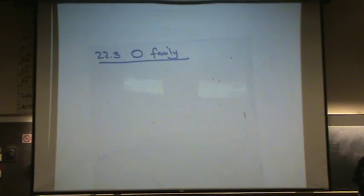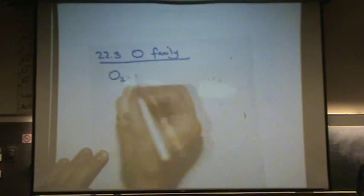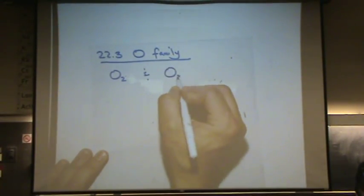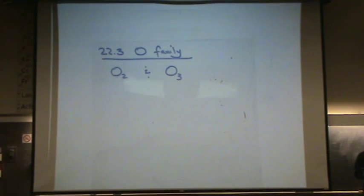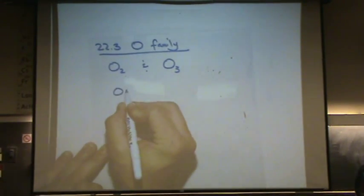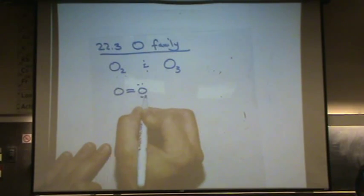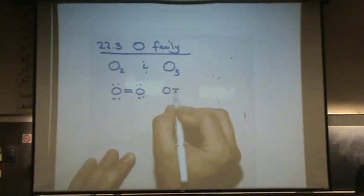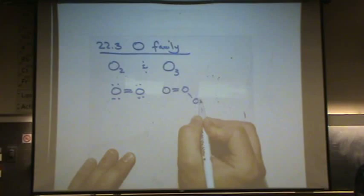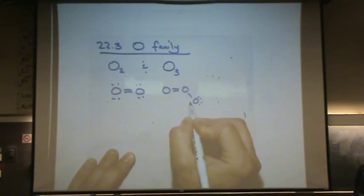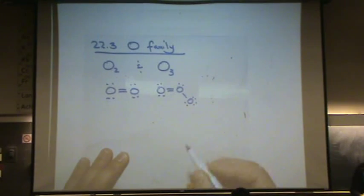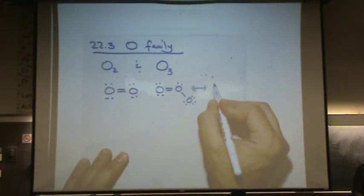This oxygen commonly will form O2, that's its elemental form as a gas, and O3 as a gas, which is ozone. O2's molecular structure, or Lewis structure, you can practice this at home, it'll look like that. O3, like this. Pretty similar.